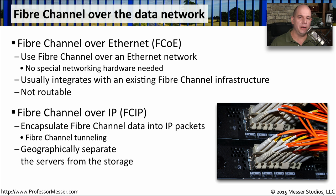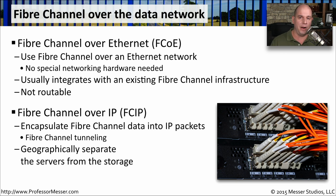One way to get around the non-routable nature of FCoE is to take all of your fiber channel information and put it into an IP packet — we do that using fiber channel over IP. Everything that would normally be sent inside that ethernet frame for fiber channel is simply put inside of an IP packet inside a frame. When we do this, we're now able to route it anywhere IP can be routed, allowing us to geographically separate our in-station devices from the storage devices themselves.